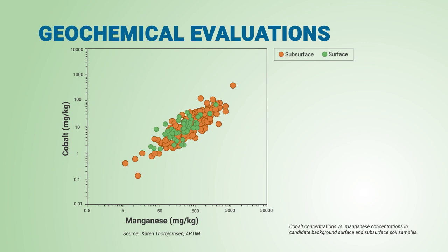Here's a scatter plot of the data. The cobalt concentrations, which are plotted along the y-axis, are proportional to the corresponding manganese concentrations, which are plotted along the x-axis. The samples form a common trend with a positive slope. The sample with the highest cobalt also has the highest manganese, and it lies on the trend. This is the outlier cobalt concentration. All of the surface samples, the green circles, have similar cobalt versus manganese ratios as the subsurface samples, because the samples all form a common trend.